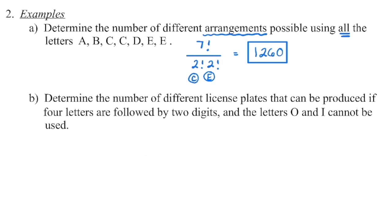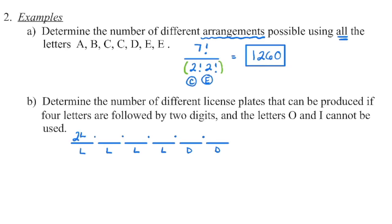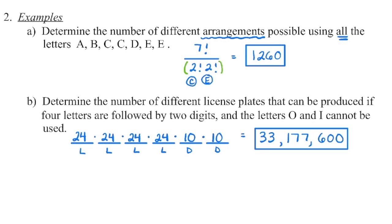In the next question, we determine the number of different license plates with four letters followed by two digits, where the letters O and I cannot be used. Draw out the spaces: letter, letter, letter, letter, digit, digit. Since we can't use O or I, only 24 of the 26 alphabet letters are available, and repeats are allowed, so each letter position has 24 possibilities. There are 10 possible digits (0–9) for each digit position. Using the fundamental counting principle, we get 33,177,600 different license plates.